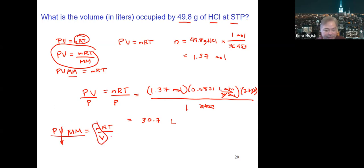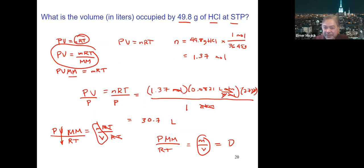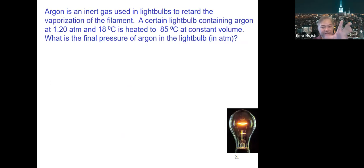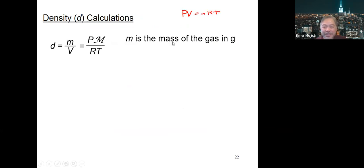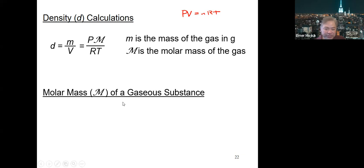To find molar mass, rearrange PV = (m/M)RT to get M = mRT/(PV). Solving for molar mass: M = mRT/(PV). The density d = m/V, so molar mass equals density times R times T over P. The formula PV·M = mRT rearranged gives M = mRT/(PV).